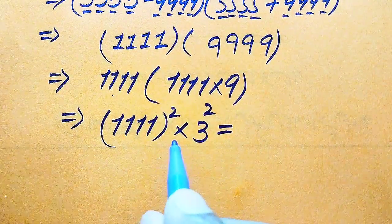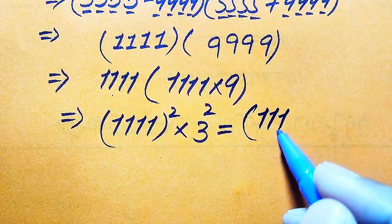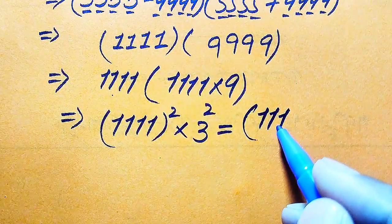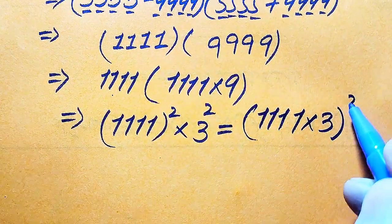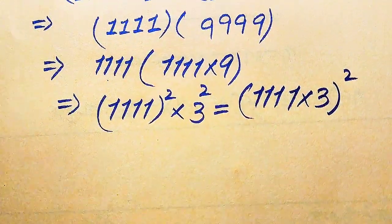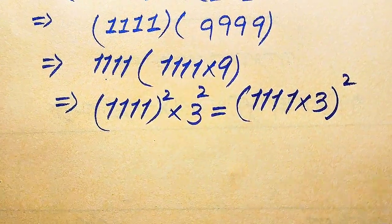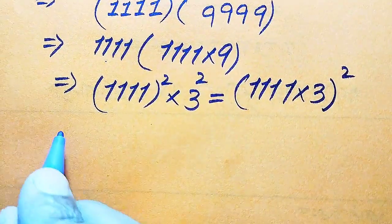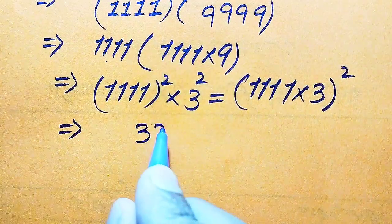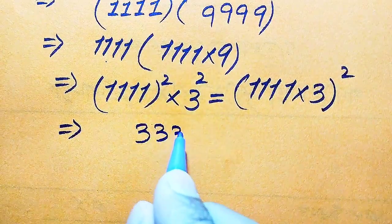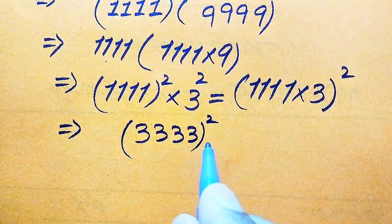We need to combine the squares of both values, and it becomes 1111 times 3, whole squared. When we multiply these two values it becomes 3333 whole squared.